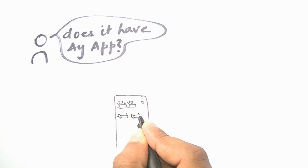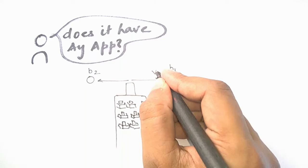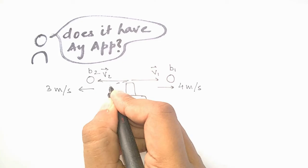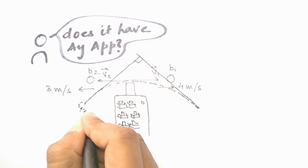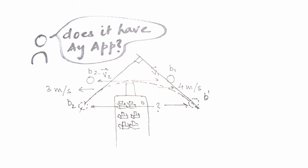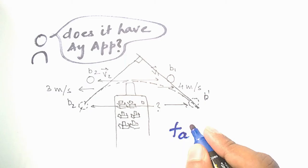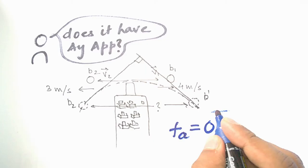Now we will try to understand its application with an example. Assume that two balls are thrown in opposite directions from the top of a building with different velocities — say 4 meters per second and 3 meters per second. What you have to find is the distance between these two balls when their velocity vectors are perpendicular to each other. You can pause the video and think about it, or continue.